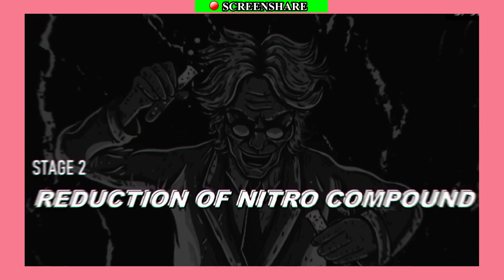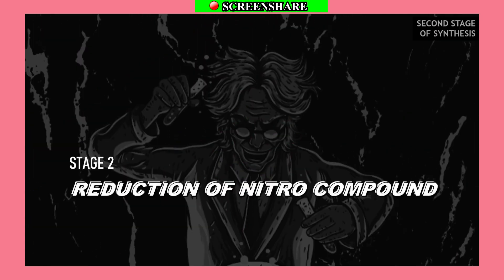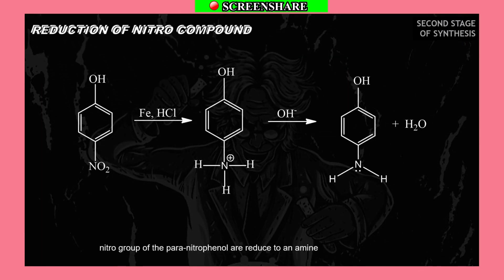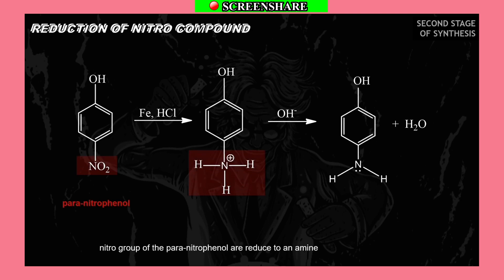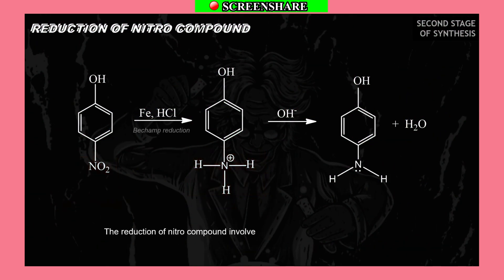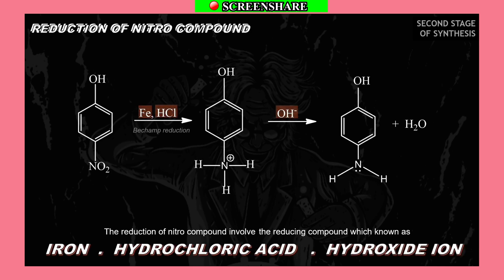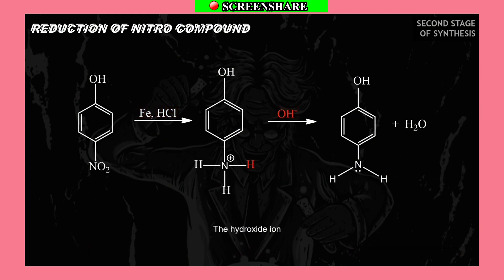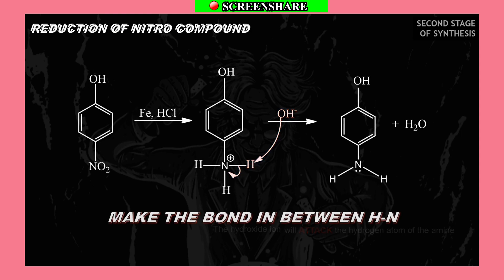In the reduction of the nitro compound, the nitro group of para-nitrophenol is reduced to an amine, giving para-aminophenol. The reduction of the nitro compound involves reducing agents known as iron and hydrochloric acid, and hydroxide ion.